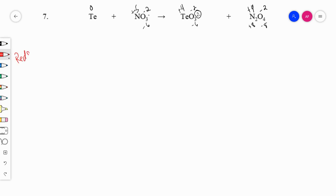Let's write reduction first. Again, it doesn't really matter which one we do first or second. It really doesn't even matter which one's oxidation, which one's reduction. It all works out the same. So reduction NO3 minus yields N2O4. Okay, and oxidation is tellurium going to TeO3 2 minus.